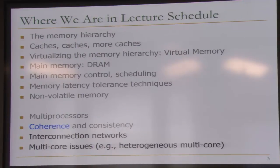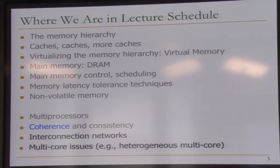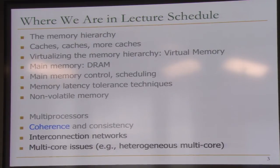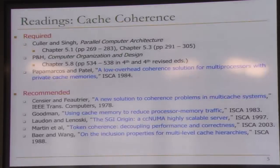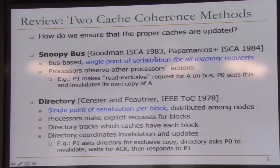Then we'll get back to more multi-core issues and interconnection networks. We're almost done actually. OK, let's talk about cache coherence. Remember, we left off at directory-based cache coherence. We were covering two cache coherence methods. We briefly talked about Snoopy bus and we're going to get back to it. Hopefully you guys are doing the readings.